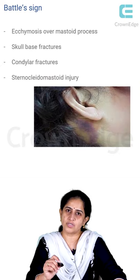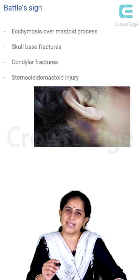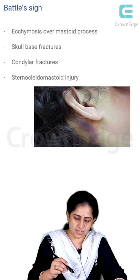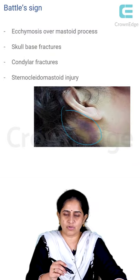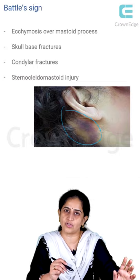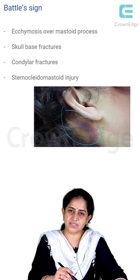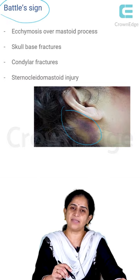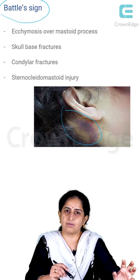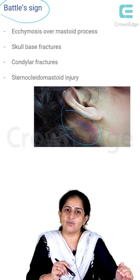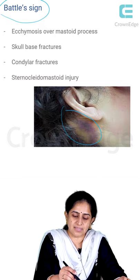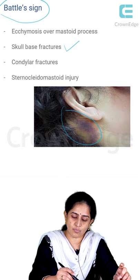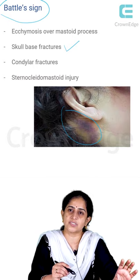Another important sign in maxillofacial trauma patients is what is called Battle's sign. Battle's sign is an ecchymosis seen over the mastoid process — the part which lies behind the ear, in the posterior auricular area. If you see an ecchymosis present behind the ear in the region of the mastoid process, this is called Battle's sign. Battle's sign can actually be a sign of something more life-threatening — if you see a Battle's sign, you should suspect a middle cranial fossa skull base fracture, as skull base fractures present as this type of ecchymosis in the post-auricular region.